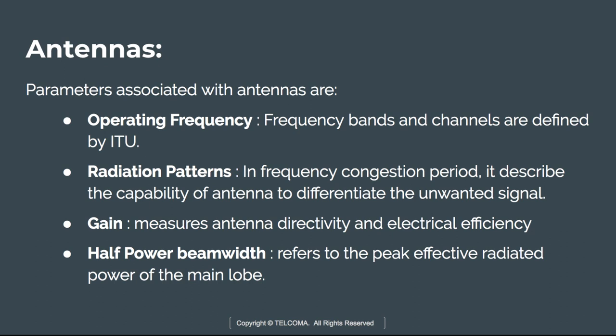The next parameter is gain. Gain is a function of antenna size and its unit is dBi — decibels over an isotropic radiator. Gain measures antenna directivity and electrical efficiency. It is defined at three frequencies: the bottom frequency, the middle frequency, and the top frequency band.